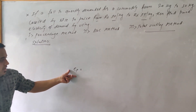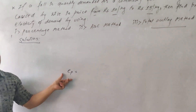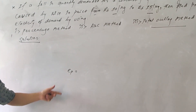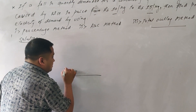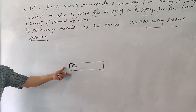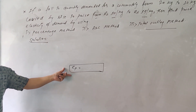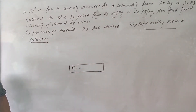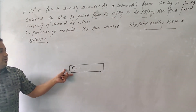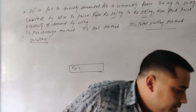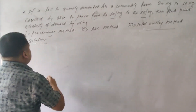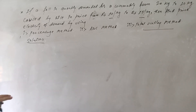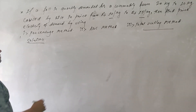The percentage method is the ratio between percentage change in quantity demanded for goods and services and percentage change in price of goods and services.